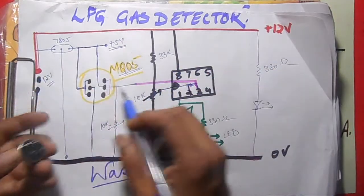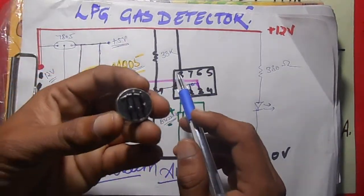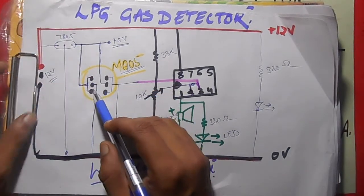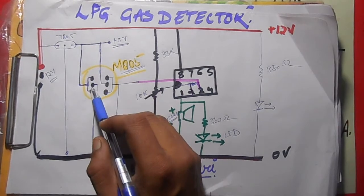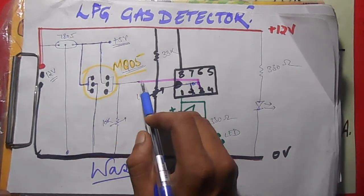MQ05 is the gas sensor in which two of the side pins we have attached, and we are providing 5 volt supply because the sensor works on 5 volt. So we have to give it regulated 5 volt DC supply. Two pins are shorted and 5 volt is supplied to it, and the rest two pins are again shorted and output is taken out from it.